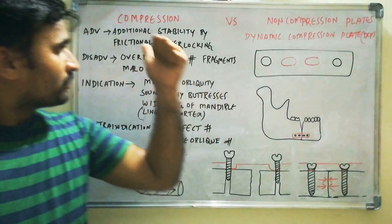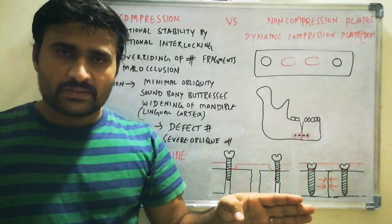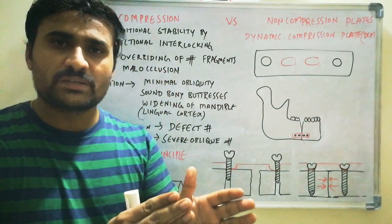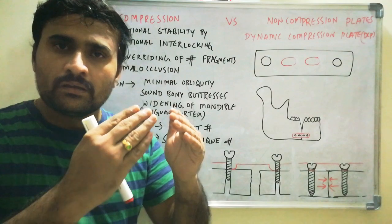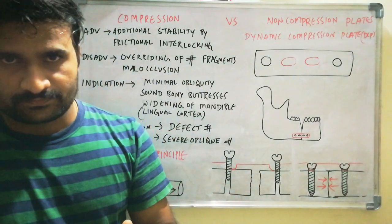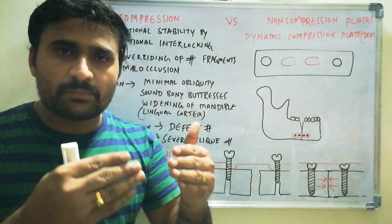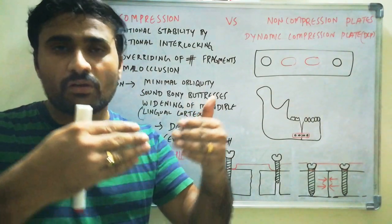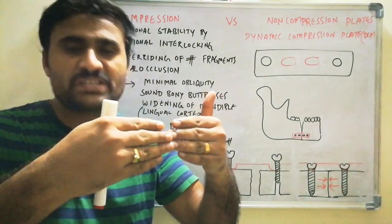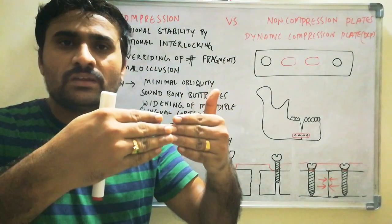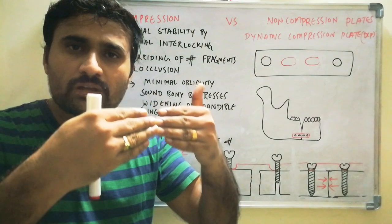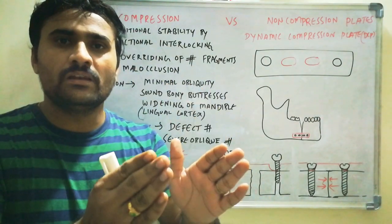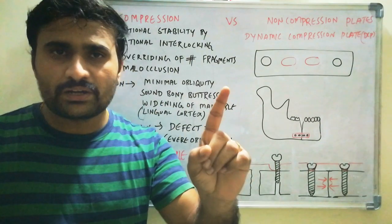The main advantage of compression plates is additional stability. If you fix two compression plates, it becomes a rigid type of fixation. There is additional stability due to the frictional interlocking between the fractured fragments, because the fractured fragments are compressed. Due to the bony interface, there is frictional interlocking, which produces additional stability. That is the main advantage of compression plates.